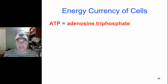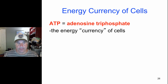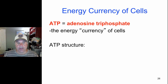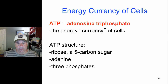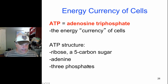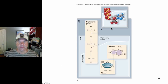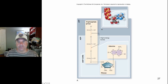Now we can delve into the energy currency molecule of the cell, adenosine triphosphate, ATP. This molecule has high energy phosphate bonds based on its structure. ATP has a 5-carbon sugar ribose, a nitrogenous base adenine, and 3 phosphates as part of this molecule. Here is the structure in diagram and in space fill.